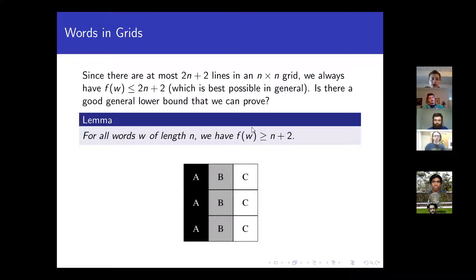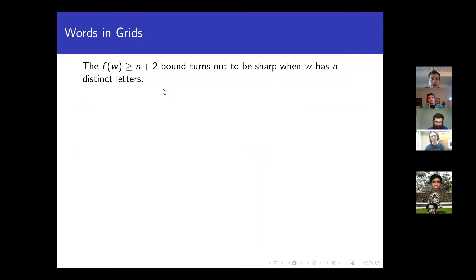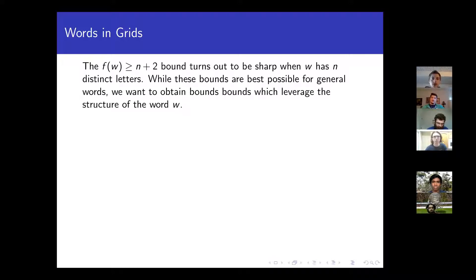So now we know our answer is always going to be between N plus 2 and 2N plus 2. Like the upper bound, this lower bound is also sharp. It will be shown later that if you take a word on N distinct letters, this is the best you can do. So for example UCSD — that's the best construction you can do for that word. These bounds are sharp in the sense that for a general word, this is the best you can prove. But you can ask: if I know a bit more structure about my word W, can I prove a stronger bound?